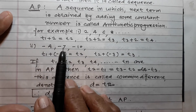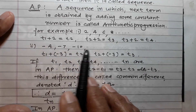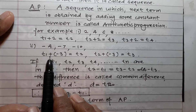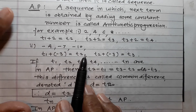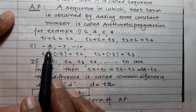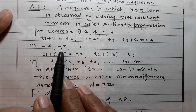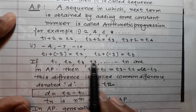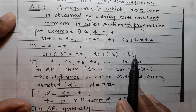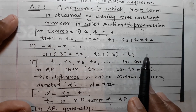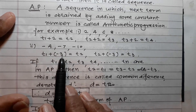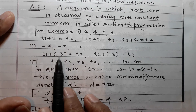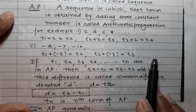Second example: -4, -7, -10. t1 + (-3) = t2, so -4 + (-3) = -7. Similarly, t2 + (-3) = t3. After adding -3 each time, you get the next term, and so on.